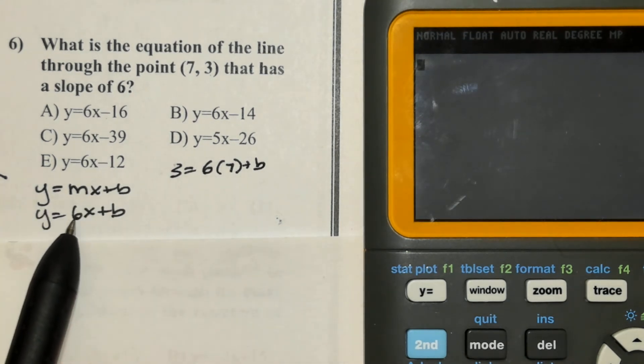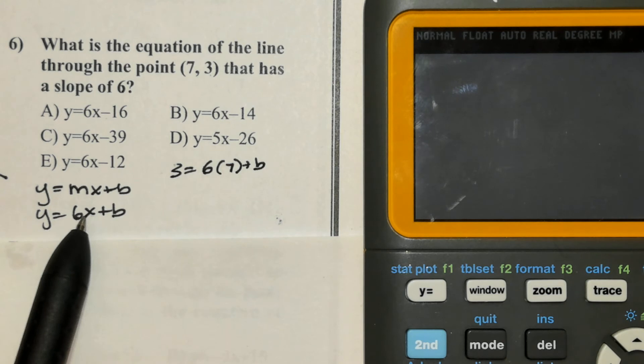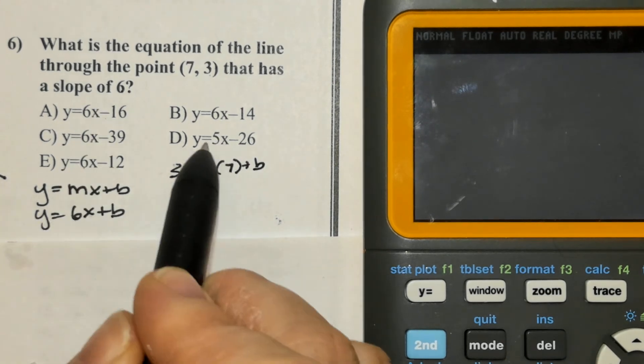Now before I go any further, recognize that we have 6 next to the x. They're stacked together. Anything without a 6 gets cancelled out.